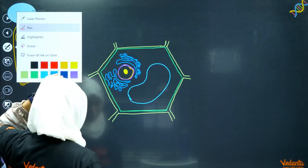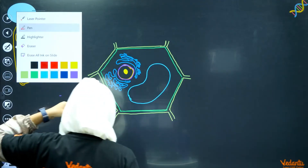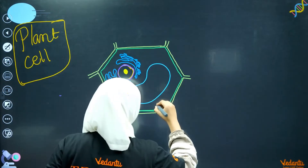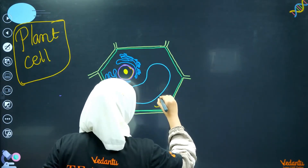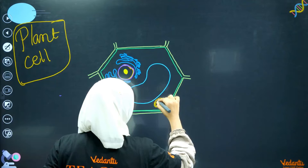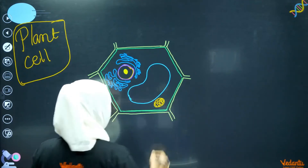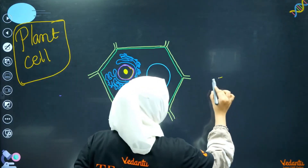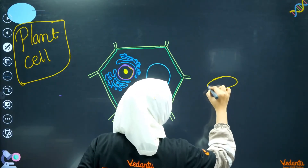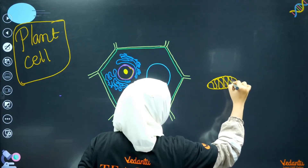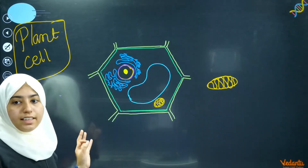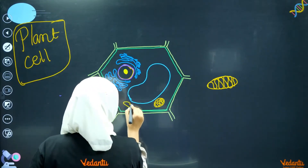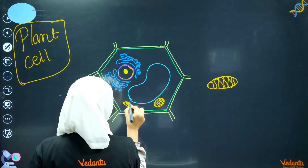Here we can draw the Golgi apparatus. I want to draw the Golgi apparatus. Here we can draw the mitochondria. Let's draw a little mitochondria. I want to make an oval shape for the mitochondria. That oval shape is the mitochondria — here is the mitochondria.